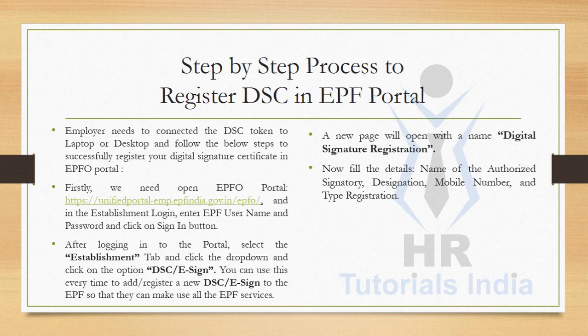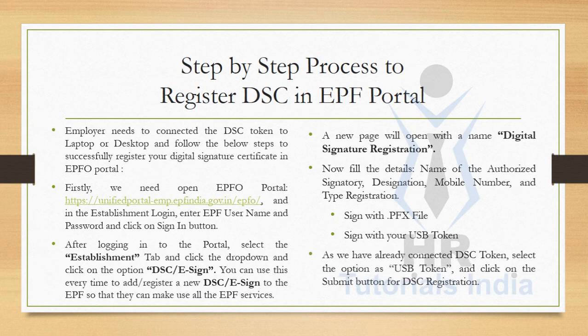Fill in the details: name of the authorized signatory, designation, mobile number, and type of registration. There are two types of registration — sign with .PFX file or sign with USB token. Since we are using a USB token, select the USB token option and click the Submit button.